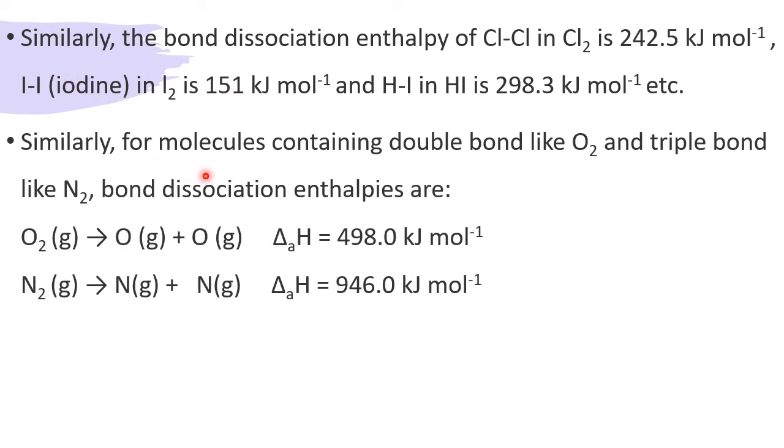Similarly, for molecules containing double bond, like O2, triple bond, like N2. Bond dissociation enthalpy is. See, O double bond O is how much? 498. N triple N is what? 946. Why it is more? Three bonds are there, between the two N in the N2. So to break all the three bonds, we require more energy. To break only two bonds, slightly less energy. And to break only one bond, single bond, less energy. So single bond, less bond enthalpy. Double bond, more bond enthalpy. Triple bond, still more bond enthalpy. Because more the number of bonds, bond multiplicity, more close they can go. Stronger is the bond. So more energy requires.